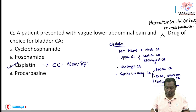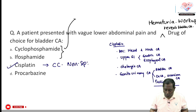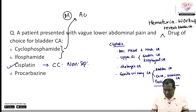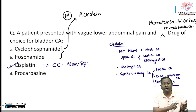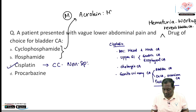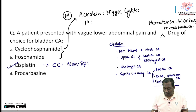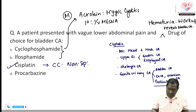A common mistake students make: when they hear hematuria, they think of cyclophosphamide or ifosfamide, because these drugs are associated with hematuria. The active metabolite of cyclophosphamide and ifosfamide is phosphoramide mustard (anti-cancer property), while acrolein is toxic to the bladder and causes hemorrhagic cystitis. Bladder function monitoring is required when giving these drugs.